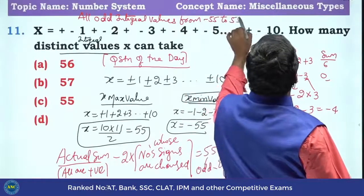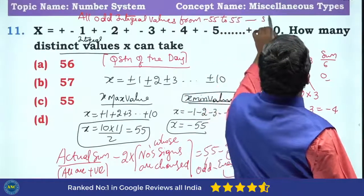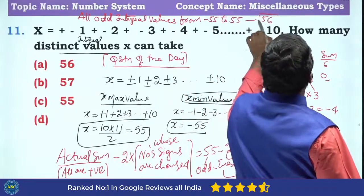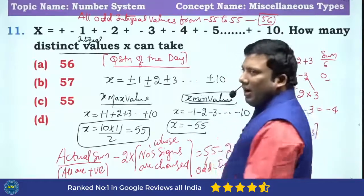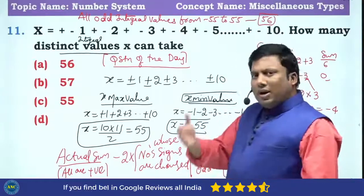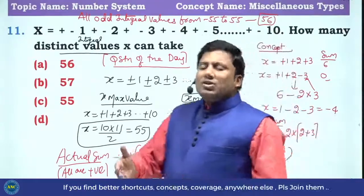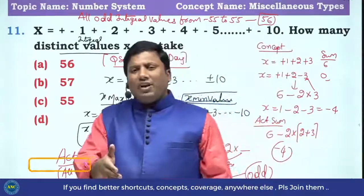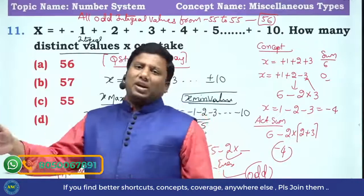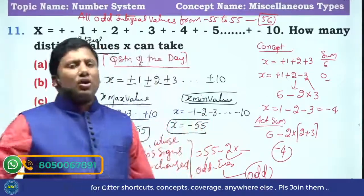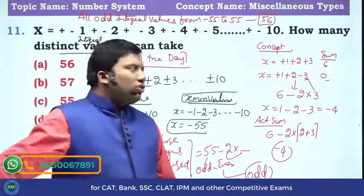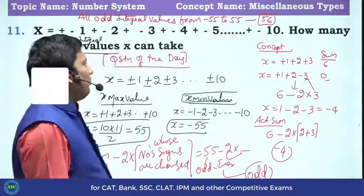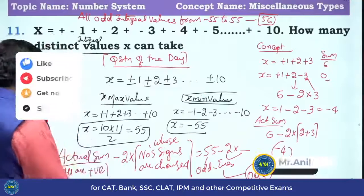All odd integral values from minus 55 to 55. In total, there are 111 numbers in that range, of which 56 are odd: minus 55, minus 53, minus 51, and so on up to minus 1, then 1, 3, 5, and so on up to 55.